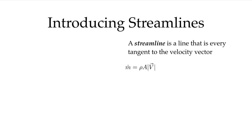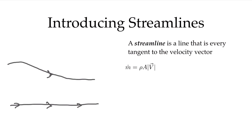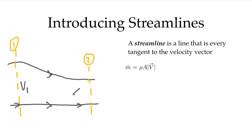Let's say these are two adjacent streamlines that go like this — I can put an arrow on them to show the direction the velocity vectors are tangent to. If I imagine a situation at point one and point two, no mass flow goes through these streamlines, so the mass flow rate here equals the mass flow rate here. For an incompressible flow, velocity and area are related. The area between these two streamlines is larger here, so V1 has to be smaller than V2. The area decreased, so the flow sped up to conserve mass.